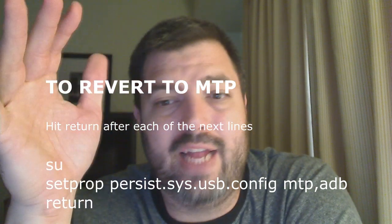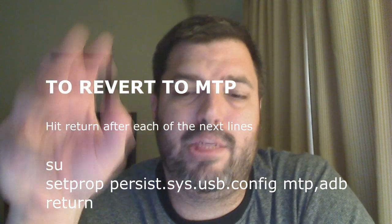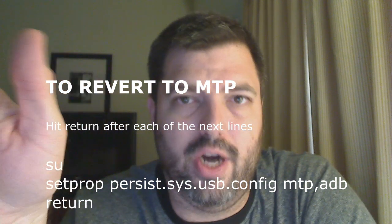All this information will be in the description — exactly what you need to type. To reverse this process, do everything the same way: type 'su', hit enter, then type 'setprop persist.sys.usb.config mtp,adb' — so instead of 'mass_storage' you type 'mtp'. Hit enter, then type 'reboot' and hit enter, and you're back to MTP media connection mode.